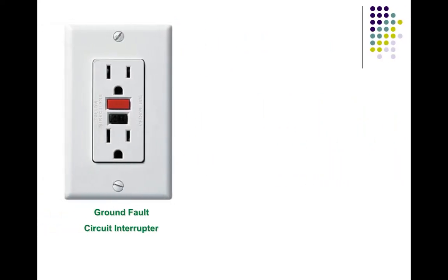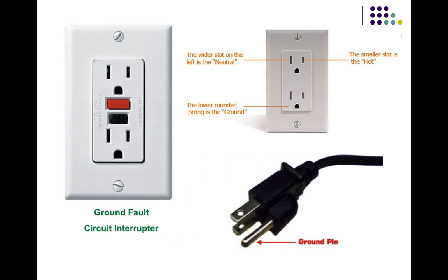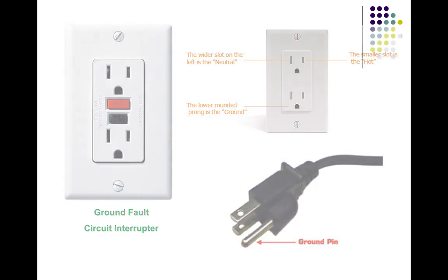You might also have ground fault circuit interrupters (GFCIs) in your house. Instead of the fuse going all the way to your fuse box, the safety device is built into the outlet itself. These are found in places near water — like kitchens — where you're more at risk of electrocution. If an outlet is constantly tripping, you may be pulling too much electricity.